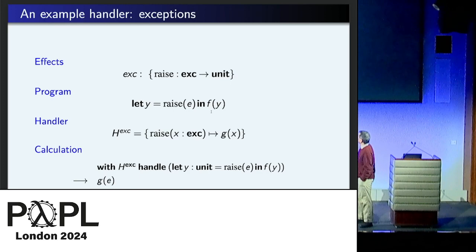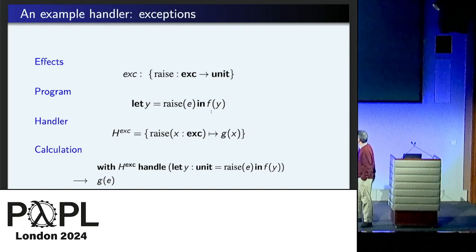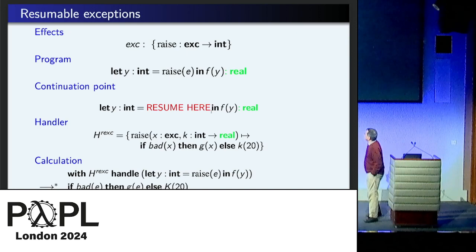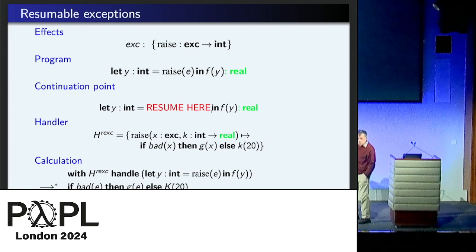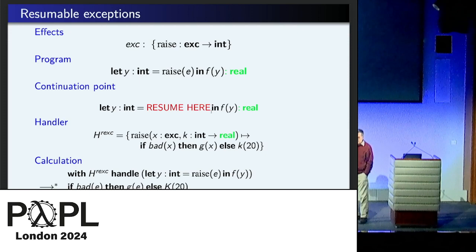So the exception handler, you write a handler for the raise, and it says when you raise the exception, you just call G. So that's what happens. You never get to F. But we can be a little bit more flexible.